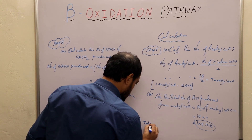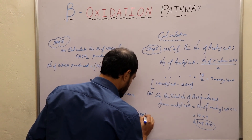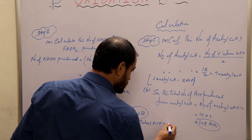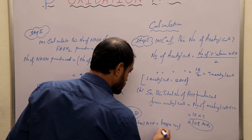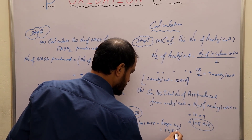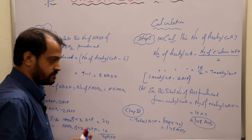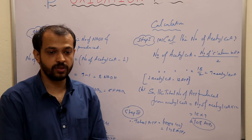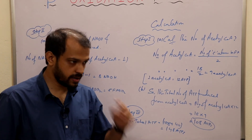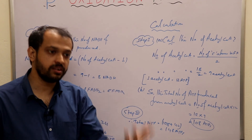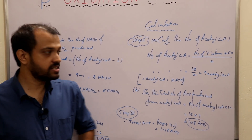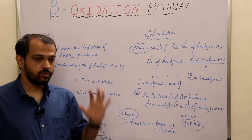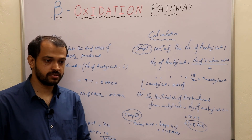Total ATP = 108 (from acetyl-CoA) + 40 (from NADH and FADH2) = 148 ATPs. As homework, practice with palmitic acid which has 16 carbons — the answer will be 131 ATPs. Next day we will discuss glycogenolysis.